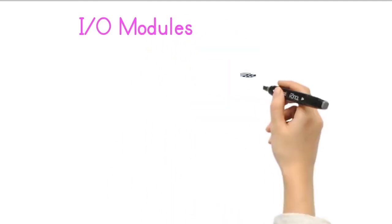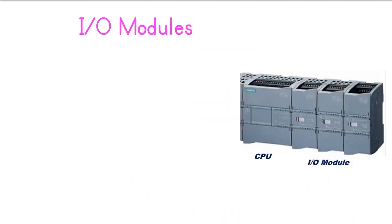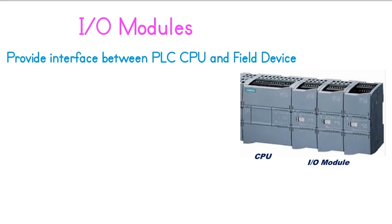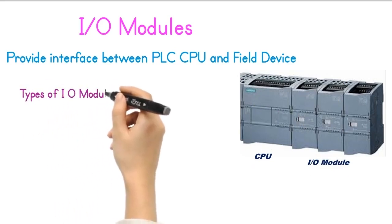I/O Module. I/O Module or Input-Output Module are essential components of a PLC system. They provide the interface between the PLC CPU and the field devices. Types of I/O Module.